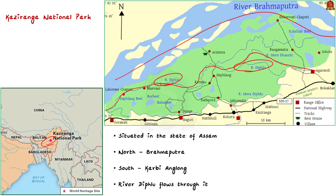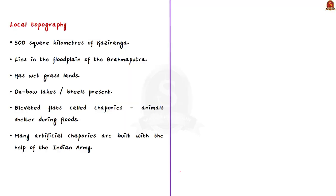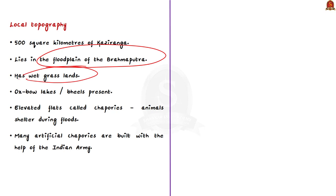To the south of Kaziranga National Park lies the Karbi Anglong Plateau — an important plateau in the northeastern region. Kaziranga National Park is 500 square kilometers in size. It has a unique habitat: most of the park lies in the flat plains of the Brahmaputra River, so it has a lot of wet grasslands and oxbow lakes. These oxbow lakes are locally known as Beels (B-H-E-E-L-S).